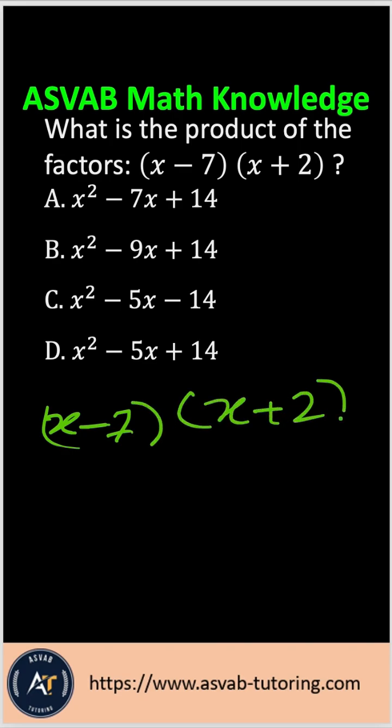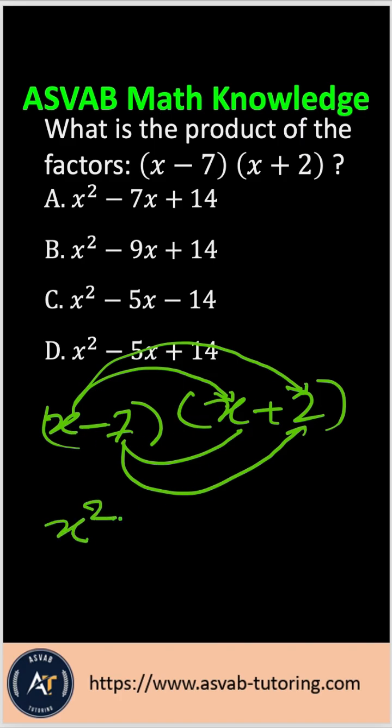We'll use the FOIL method, so you have to multiply the first with both numbers and then these with the other numbers. Let's do that. x times x gives you x squared, x times 2 gives you plus 2x, and you have negative 7 here, so negative 7...